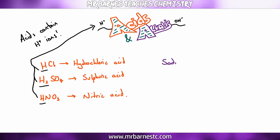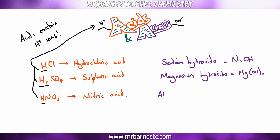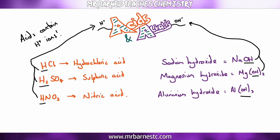If we have a look at some alkalis such as sodium hydroxide which is NaOH, magnesium hydroxide which is Mg(OH)2, and aluminium hydroxide which is Al(OH)3, again you'll notice all three have something in common — they've all got OH, and it's the OH- ion that makes something alkali.